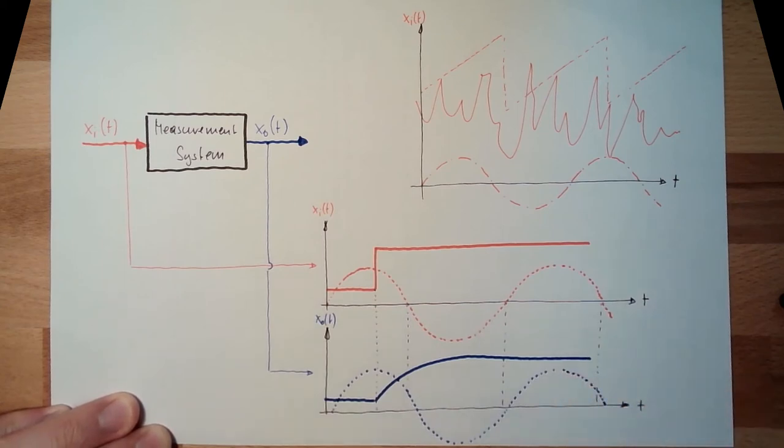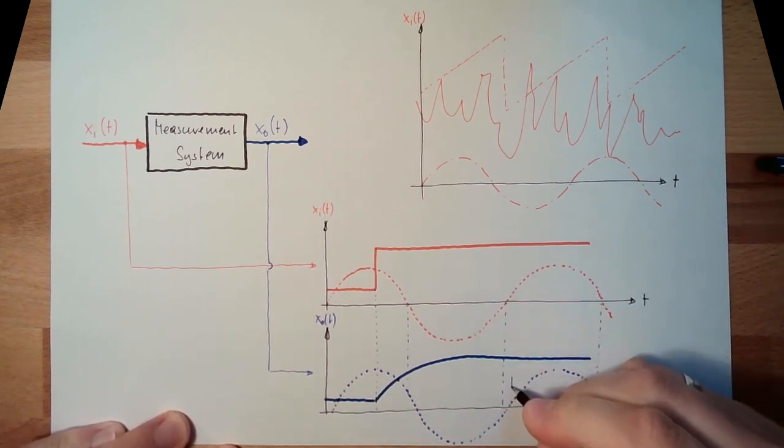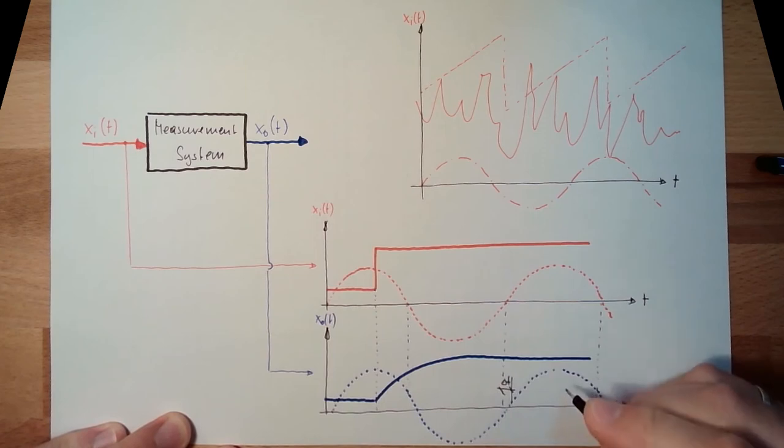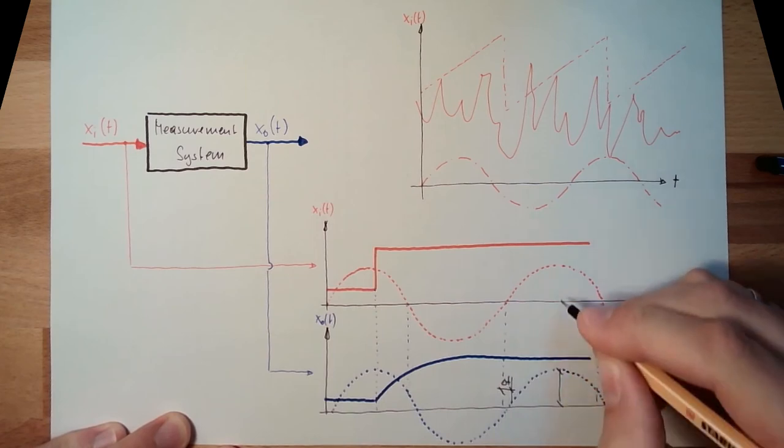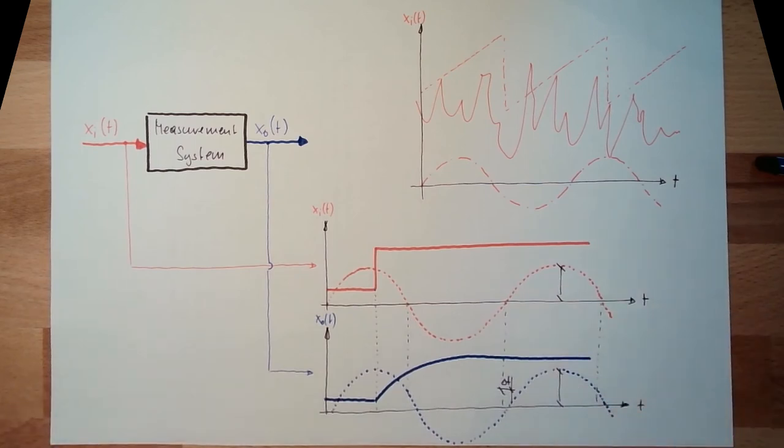And maybe not that big anymore. So we will get also a swinging thing on the output, but here we have some delay. And also this amplitude is changing, it's getting smaller usually. This is the sinus test function and the sinus response. Frequency response, frequency test function, frequency response, this is called.